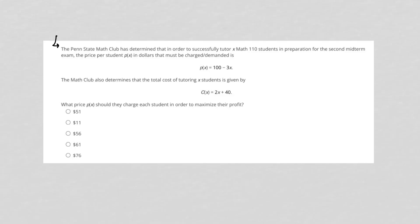This question says the Penn State Math Club has determined that in order to successfully tutor X Math 110 students in preparation for the second midterm exam, the price per student in dollars that must be charged is P of X equals 100 minus 3X. The Math Club also determines that the total cost for tutoring X students is given by C of X, which equals 2X plus 40.